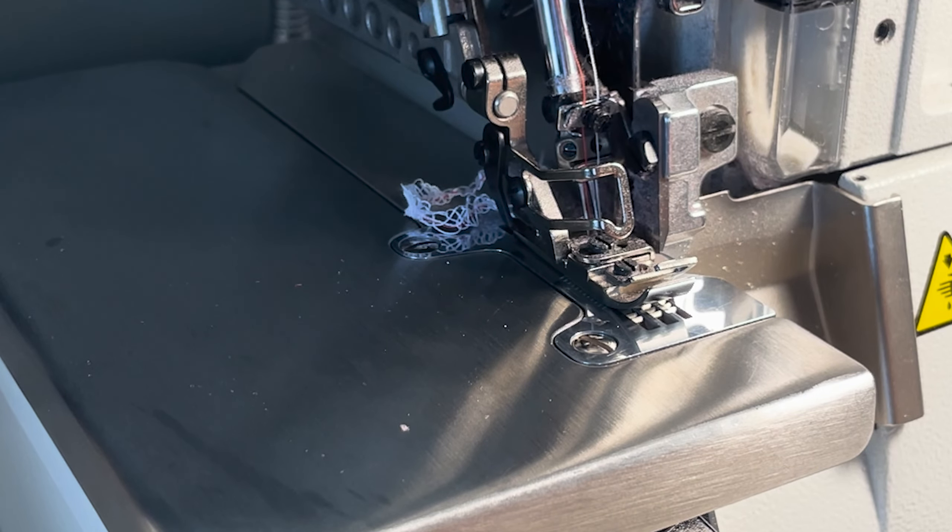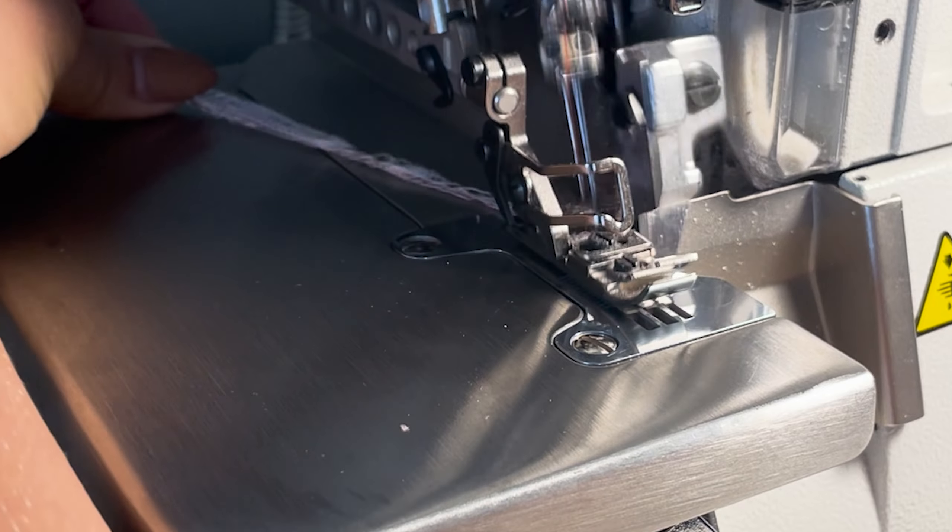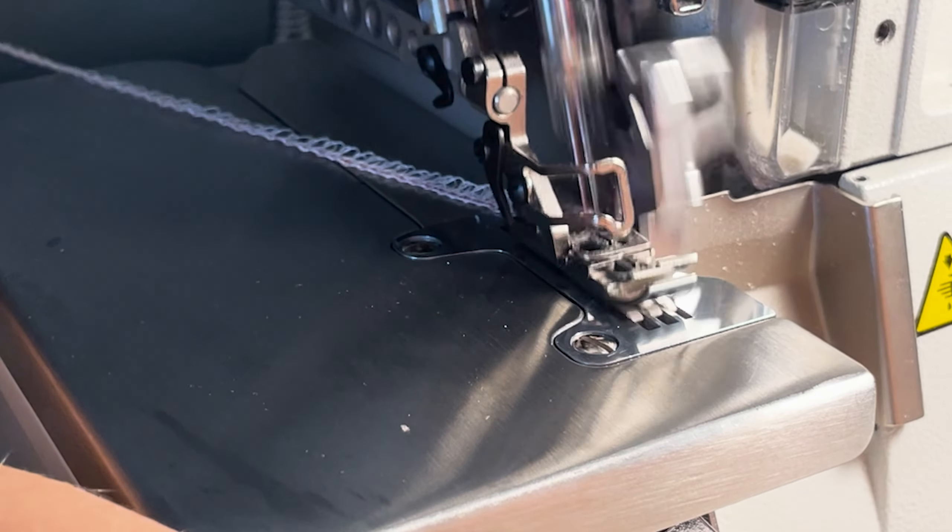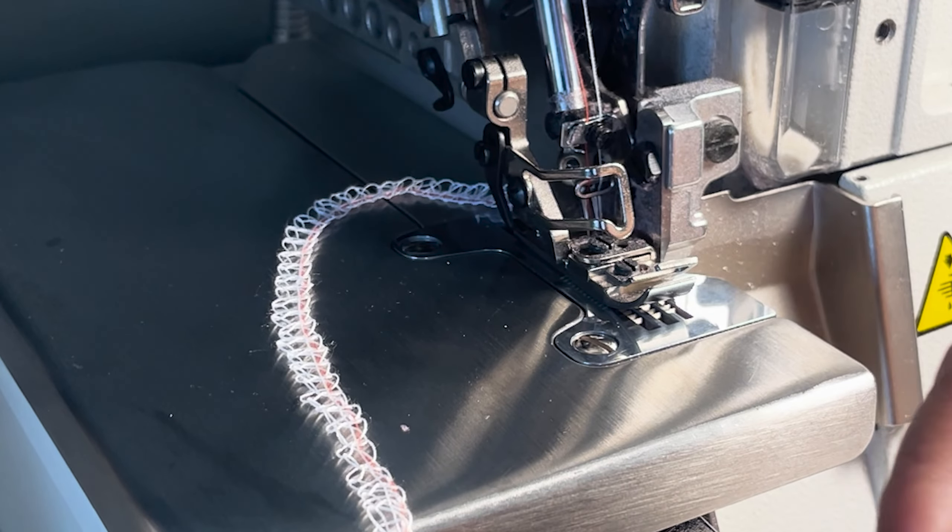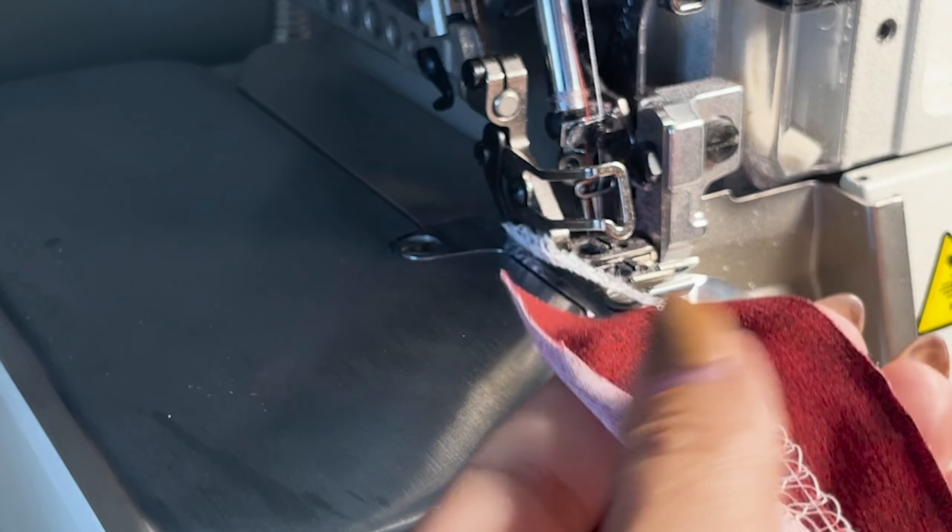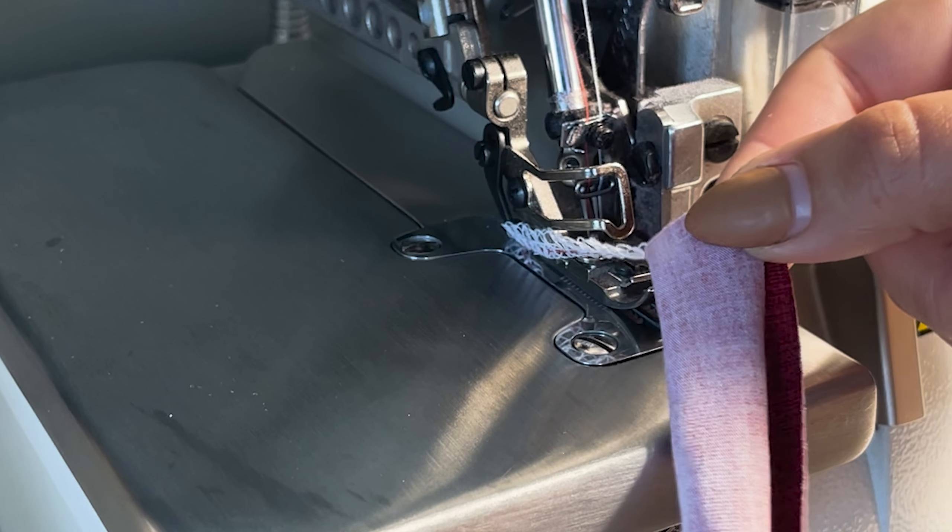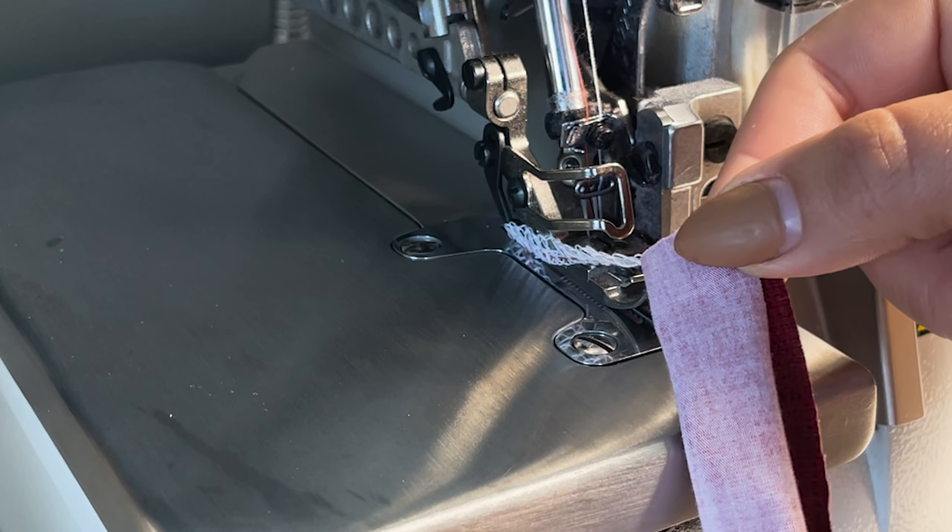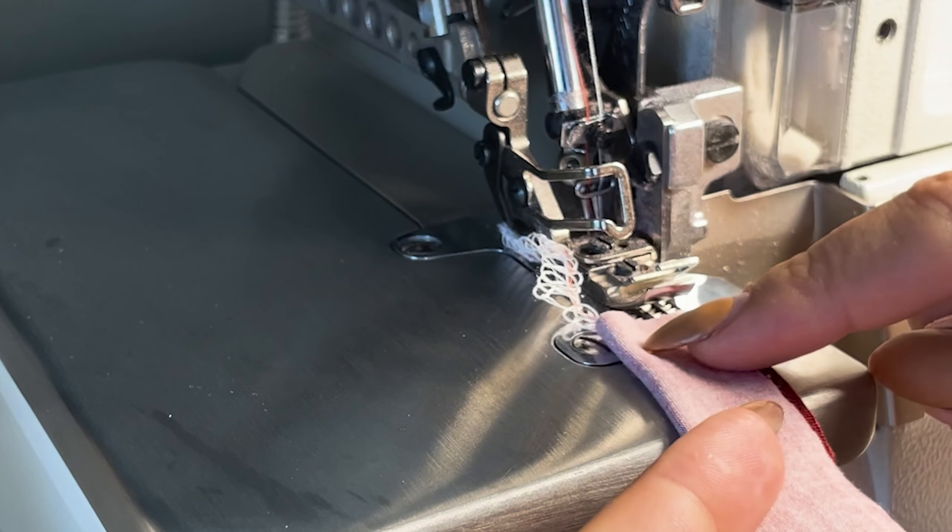The final method and probably my favorite is creating a long serger tail. With the serger tail you put it inside the strap. You want to place it all the way into the corner because you will be sewing along this edge and you don't want to sew along the tail.